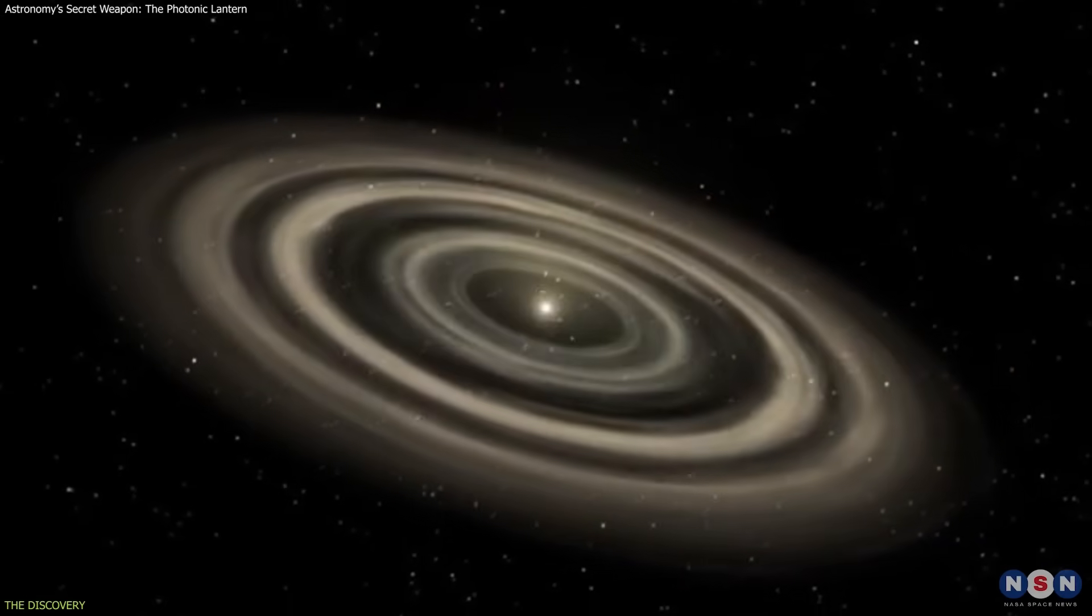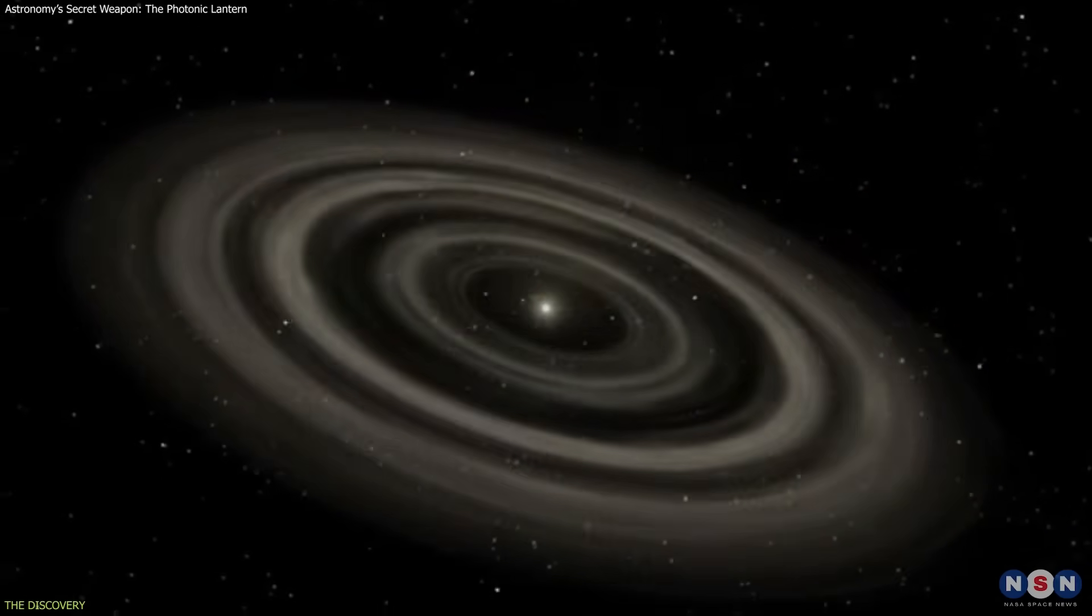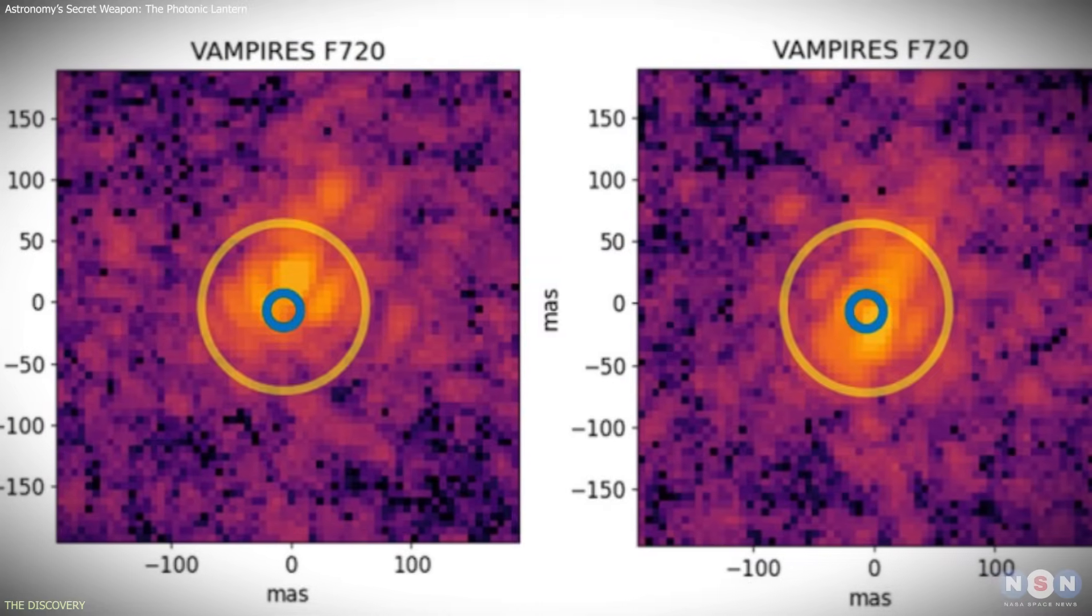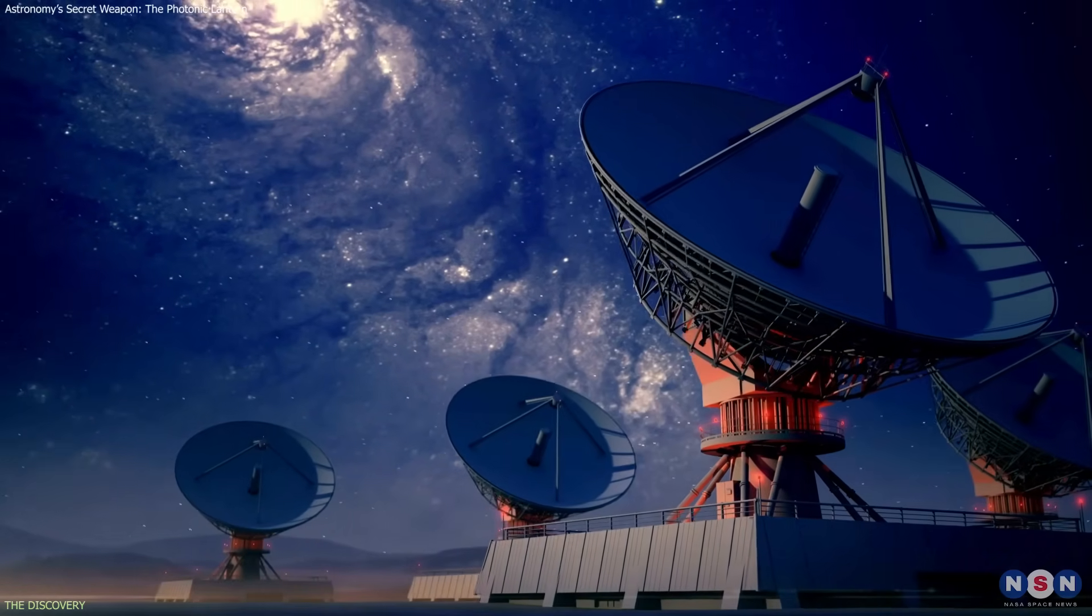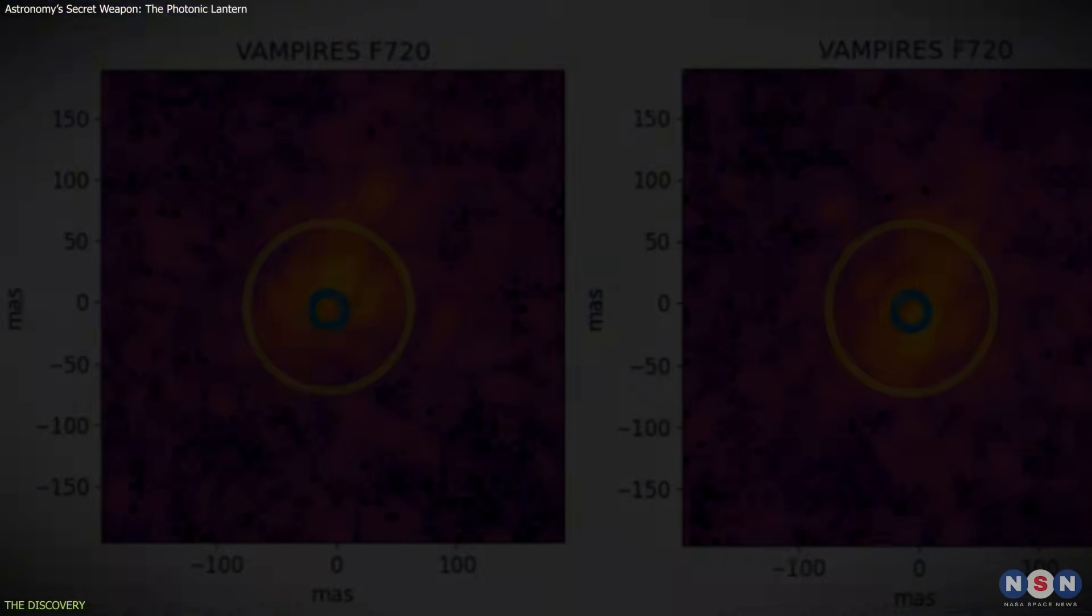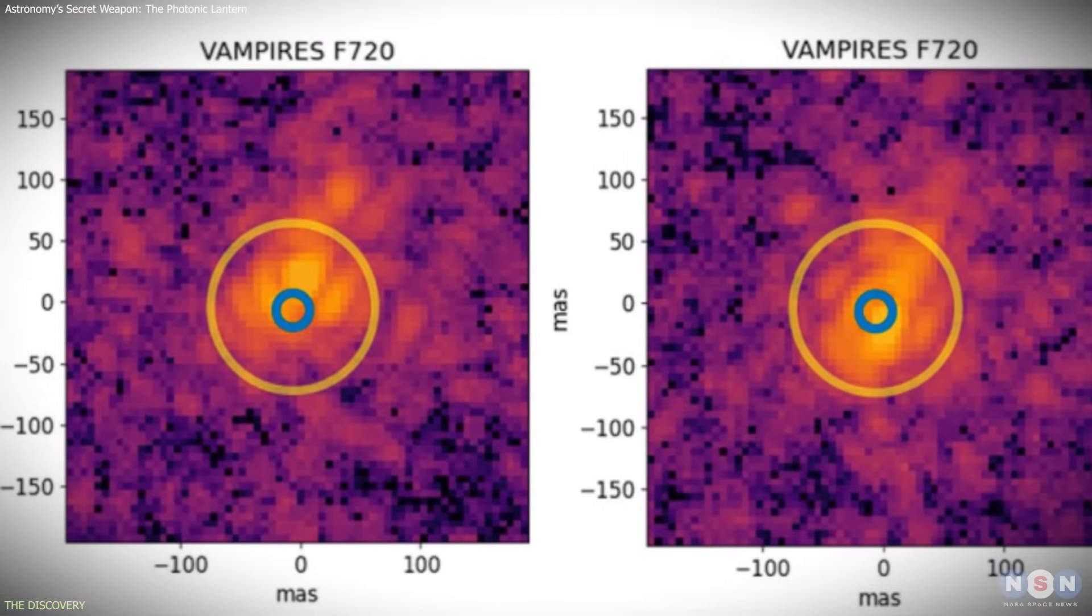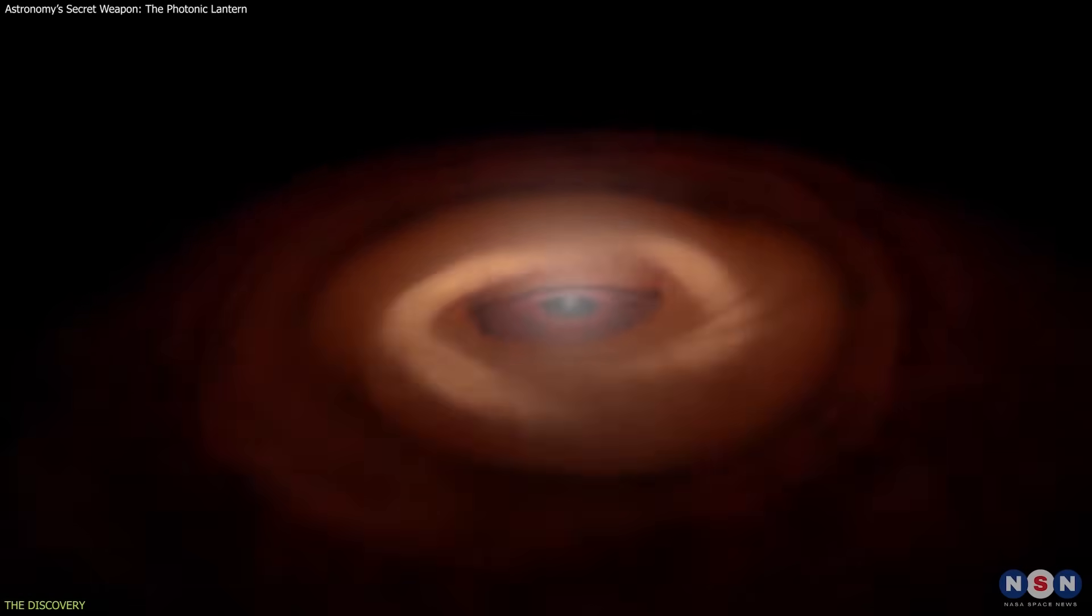In the resulting data, a surprising feature emerged. The disk isn't perfectly symmetrical. It's lopsided, a structural detail that conventional imaging methods couldn't reveal. That asymmetry could carry important clues about the physical forces shaping the system.